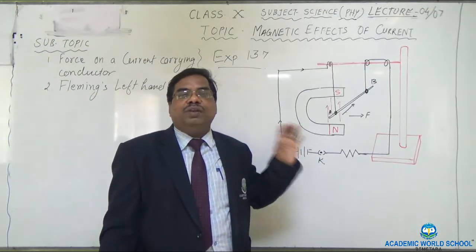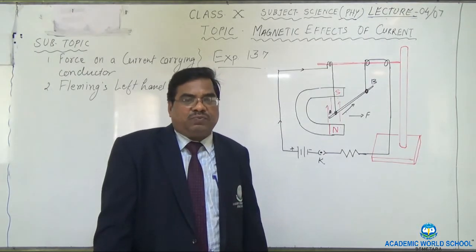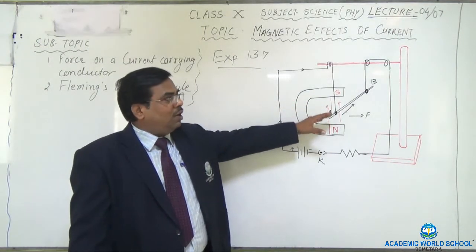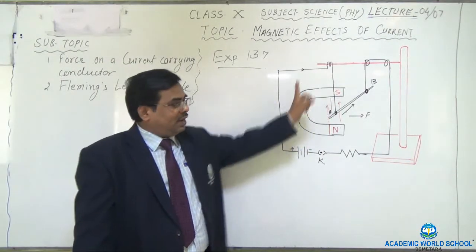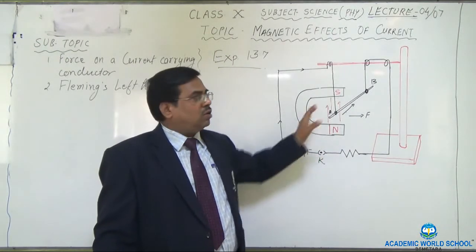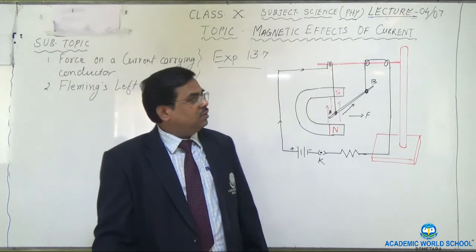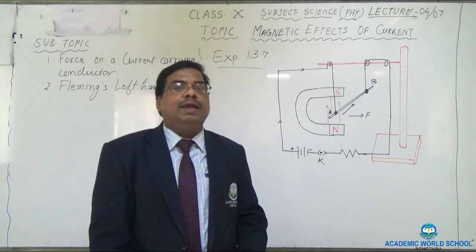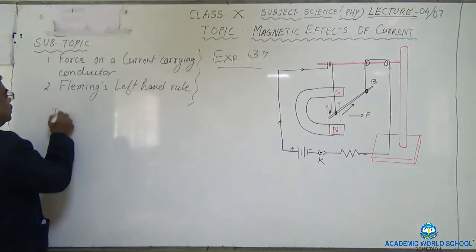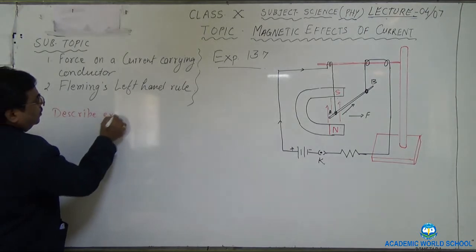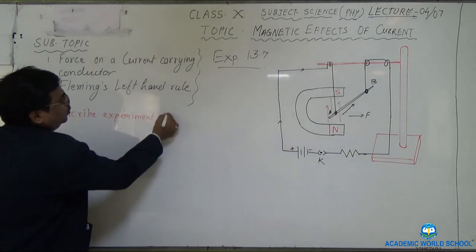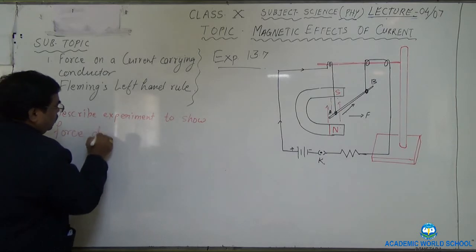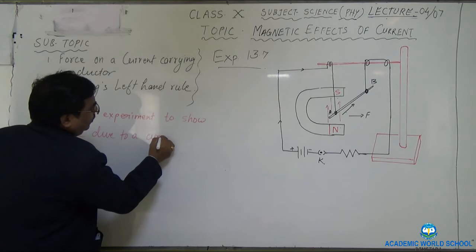This experiment you will need to explain. Rewrite experiment 13.7 from the book: take one horseshoe magnet and one rod, connect the two ends of the rod with a battery and key. When you press the key, the rod will experience one force. This is the experiment by which we can prove that there is a force. Your question will be: describe an experiment to show force due to a current carrying conductor.